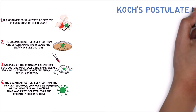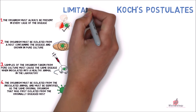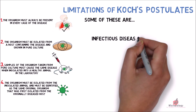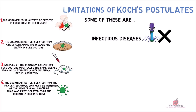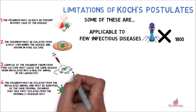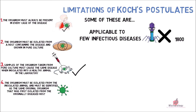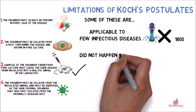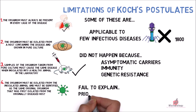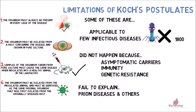Although Koch's Postulates provided guidelines to identify the cause of disease, there are some inherent limitations. The postulates explain some infectious diseases but not viruses, as techniques to isolate viruses were not developed during the 1800s. As per the third postulate, the experimental animal should develop the disease, but this did not happen in every case due to asymptomatic carriers, immunity, and genetic resistance. Koch's Postulates also fail to explain prion diseases and other agents that cannot be grown in cultures.